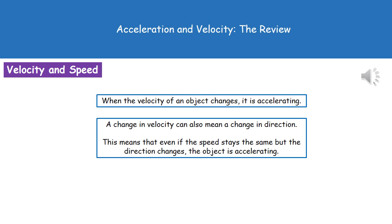If that car then turns a corner at that 30 miles an hour, it has still accelerated. Because the direction has changed, it has accelerated even if the speed has remained constant.